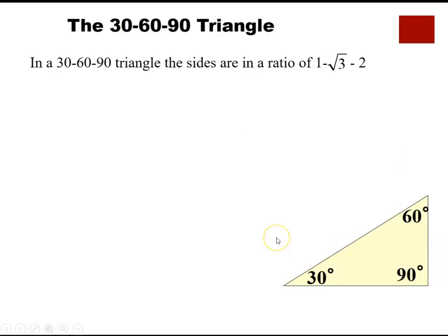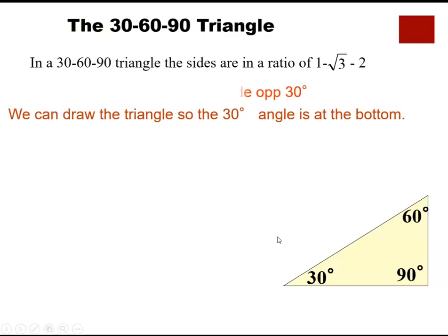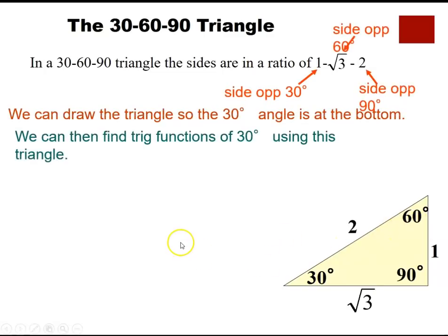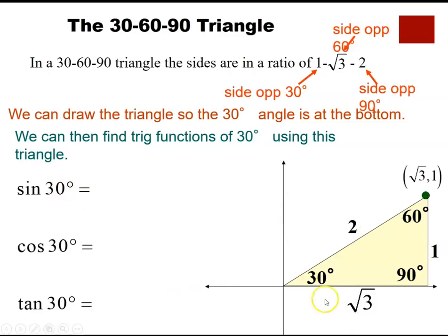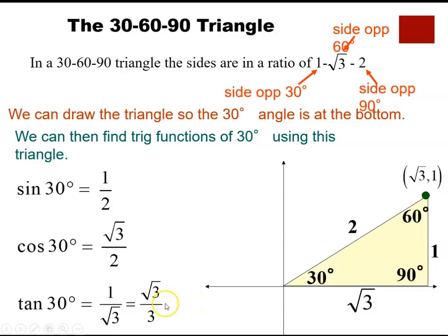For 30 degrees in the 30-60-90 triangle, the sides are 1 (opposite to 30°), square root of 3 (opposite to 60°), and 2 (hypotenuse). Sine 30 equals opposite over hypotenuse, which is 1 over 2. Cosine 30 equals square root of 3 over 2. Tangent 30 equals 1 over square root of 3, rationalized to square root of 3 over 3.